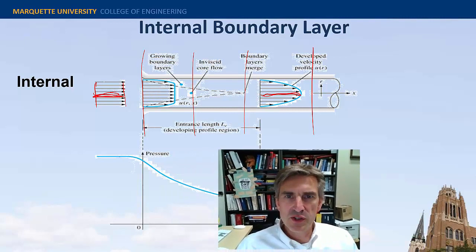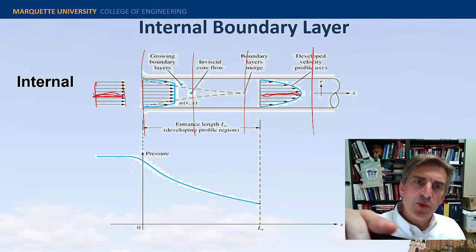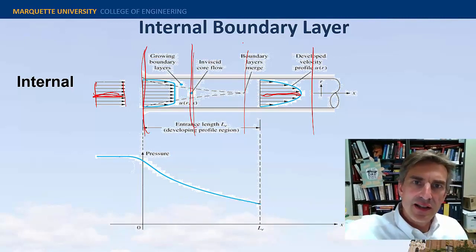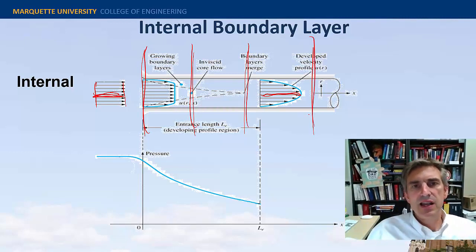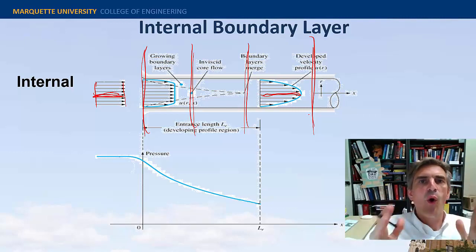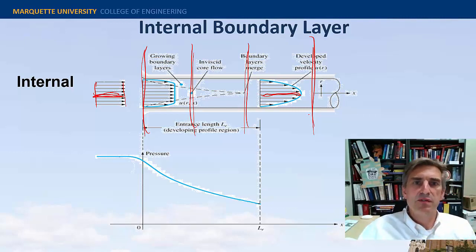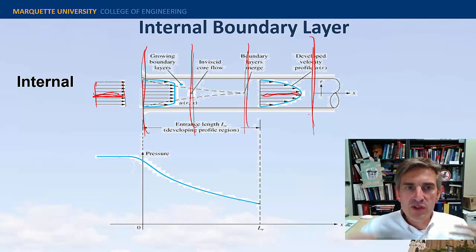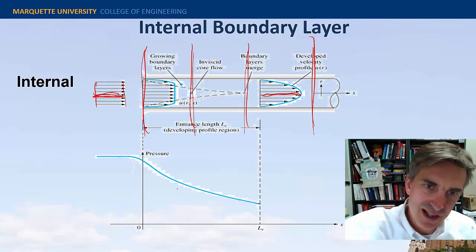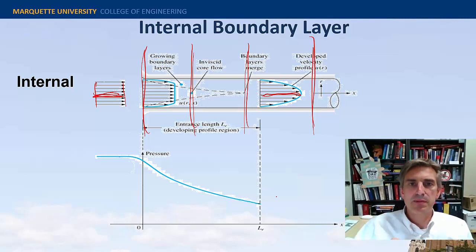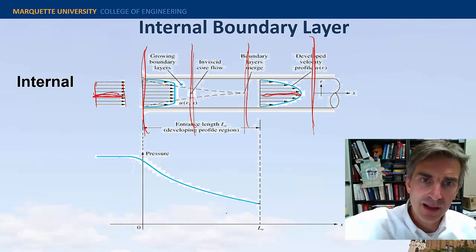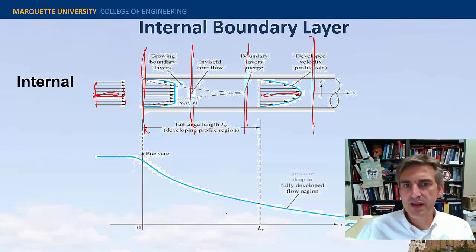We could also talk about what this is doing to the pressure. Because we can't slow down the average velocity at any station, it means then that viscosity can't slow down the flow on average. It can slow it near the viscous core region but then the center region is going to accelerate as a result. So where does the viscosity - what is it doing? It's pulling energy out of the pressure. So the pressure is constantly dropping along the pipe. It drops quite rapidly in the developing region and then once it's fully developed it drops linearly thereafter.